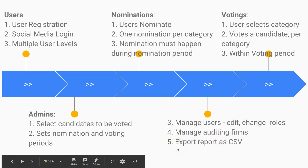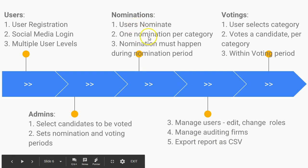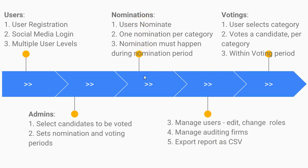At the end of the day, both admin and the auditing firm need to be able to export reports as CSV or Excel — for example, the list of nominations or the voting results. They'll just click to export a CSV or Excel sheet.